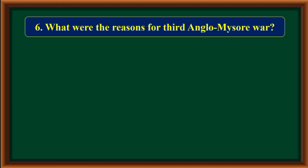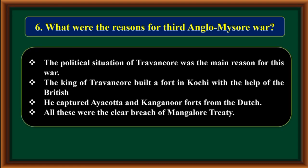What were the reasons for the Third Anglo-Mysore war? The political situation of Travancore was the main reason for this war. The King of Travancore built a fort in Kochi with the help of the British. He captured Ayakutta and Kanganur forts from the Dutch. All these were a clear breach of the Mangalore Treaty.